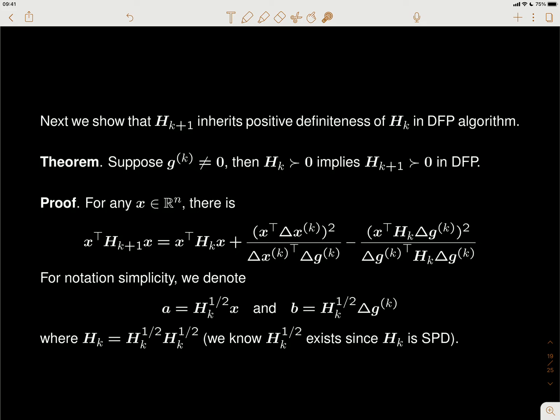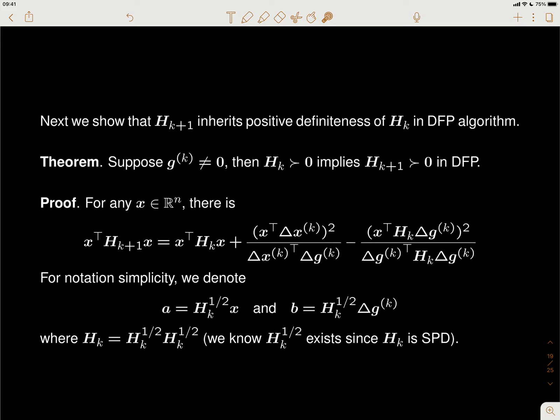The benefit of the DFP over the rank-one update is that H_{k+1} is guaranteed to be a positive definite matrix as long as H_k is a positive definite matrix, which inherits the positive definiteness of H_k. This is described by the theorem below, which says that as long as the gradient is not zero and H_k was a positive definite matrix, then using the DFP rule to get H_{k+1}, it will still be a positive definite matrix.